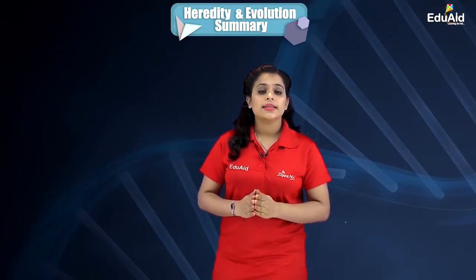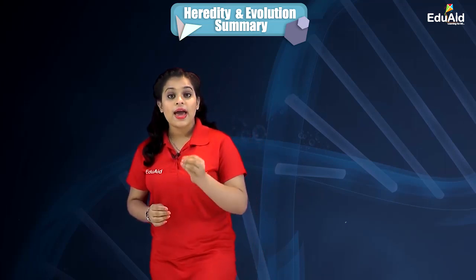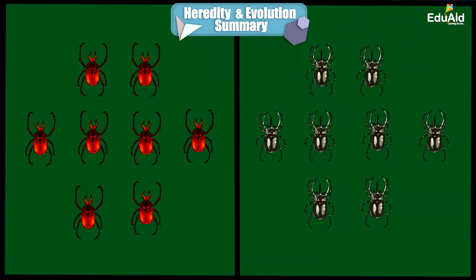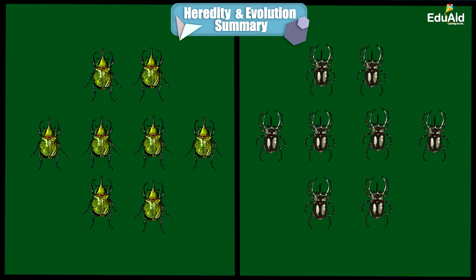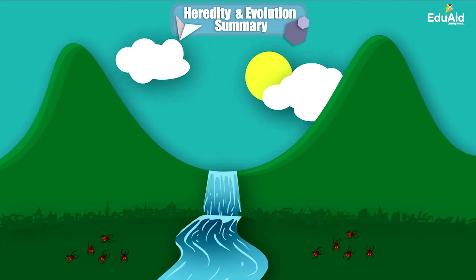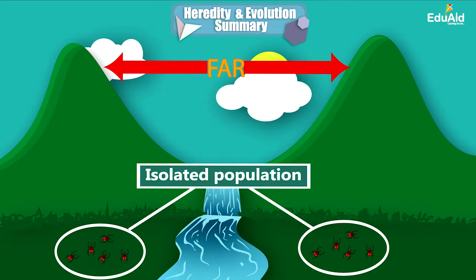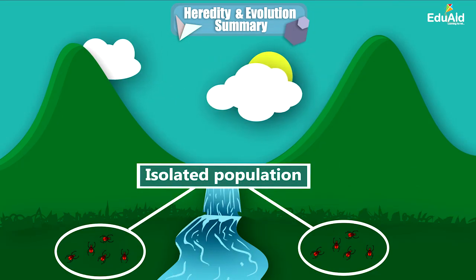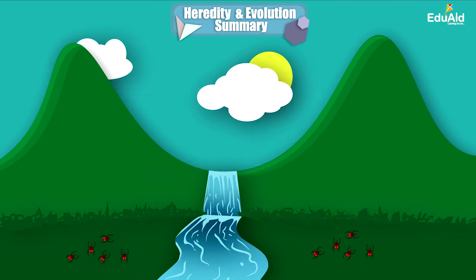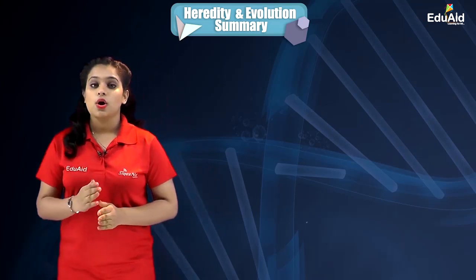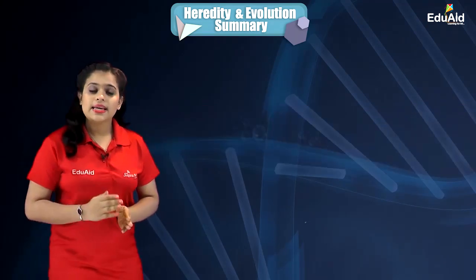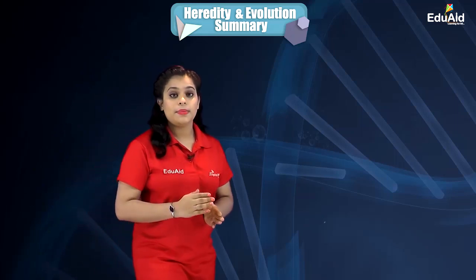We also learned that processes like genetic drift and natural selection cause variation in organisms. When combined with the isolation of a population so that there is no gene exchange between them, this gives rise to the formation of a new species from pre-existing ones — a process called speciation. Speciation may take place when variations are combined with geographic isolation.